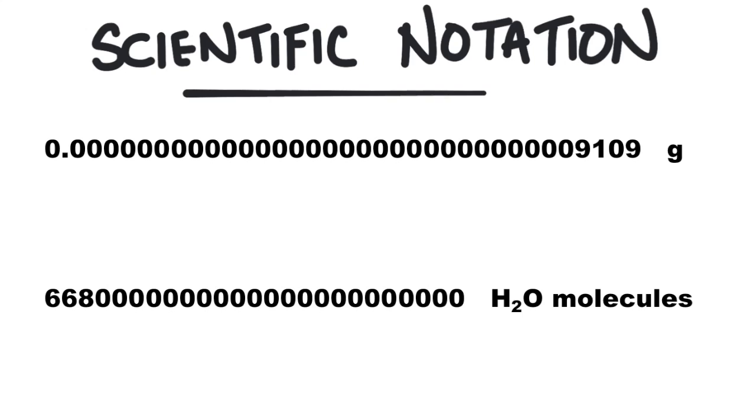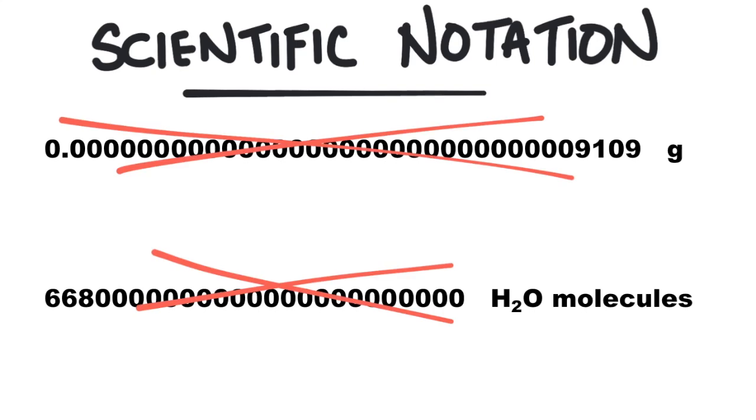Basically, scientific notation is writing really big and really small numbers in a way so that we don't have to draw in all of those zeros.